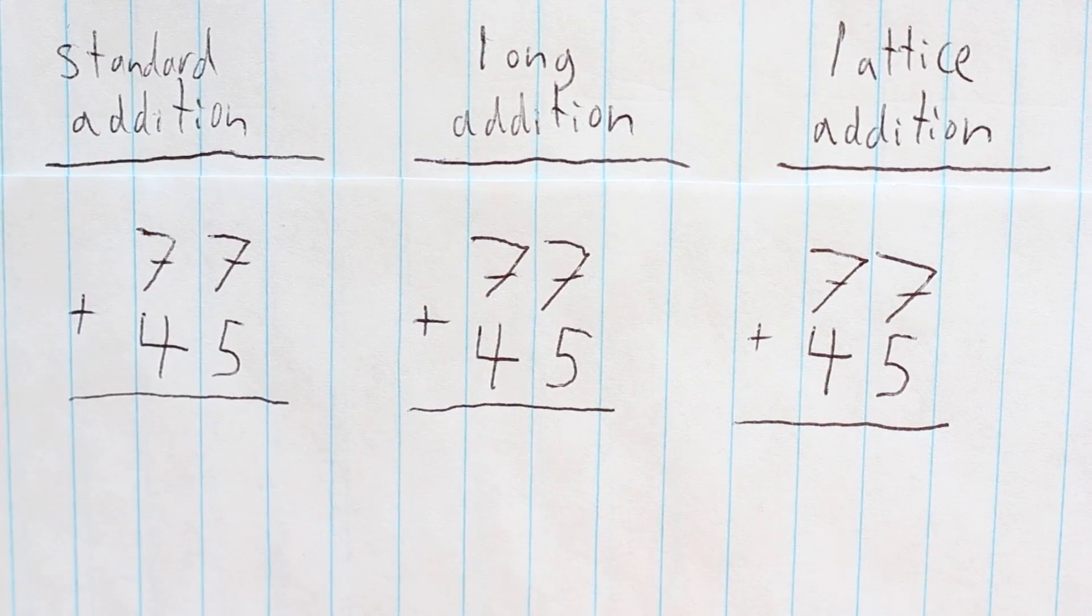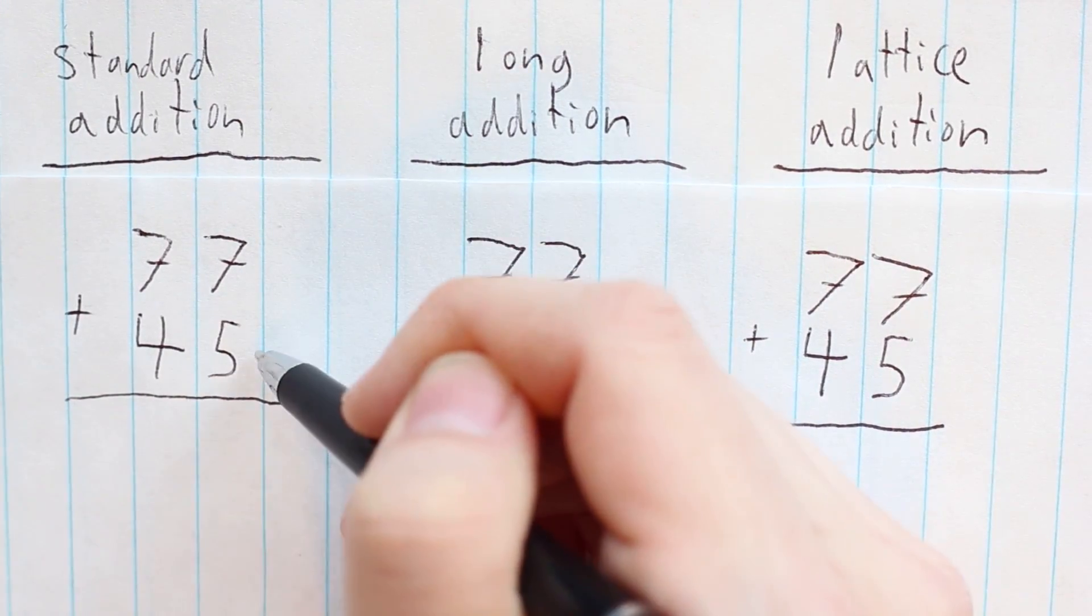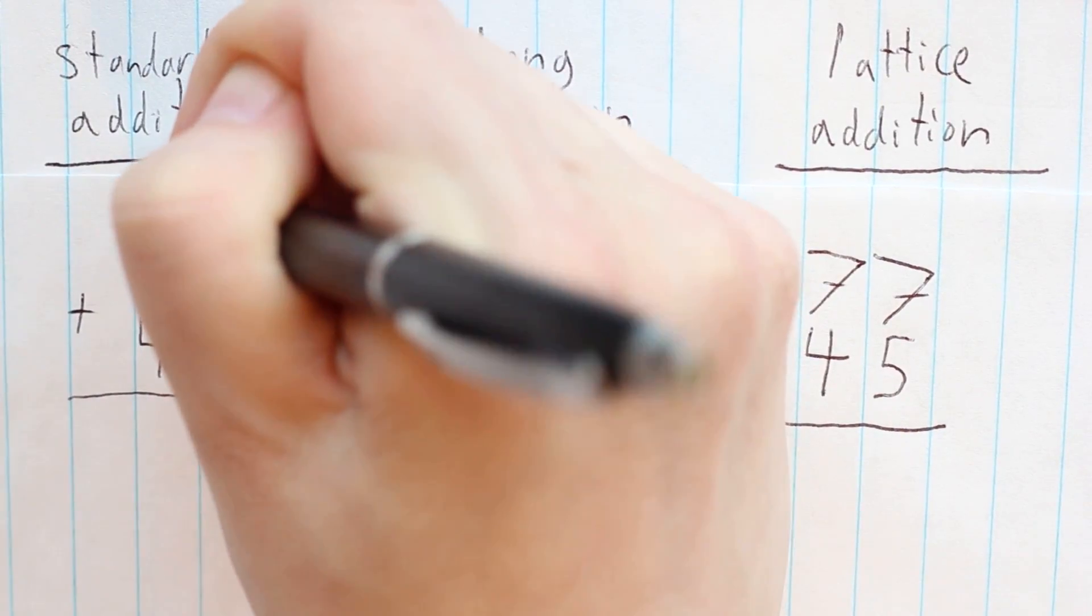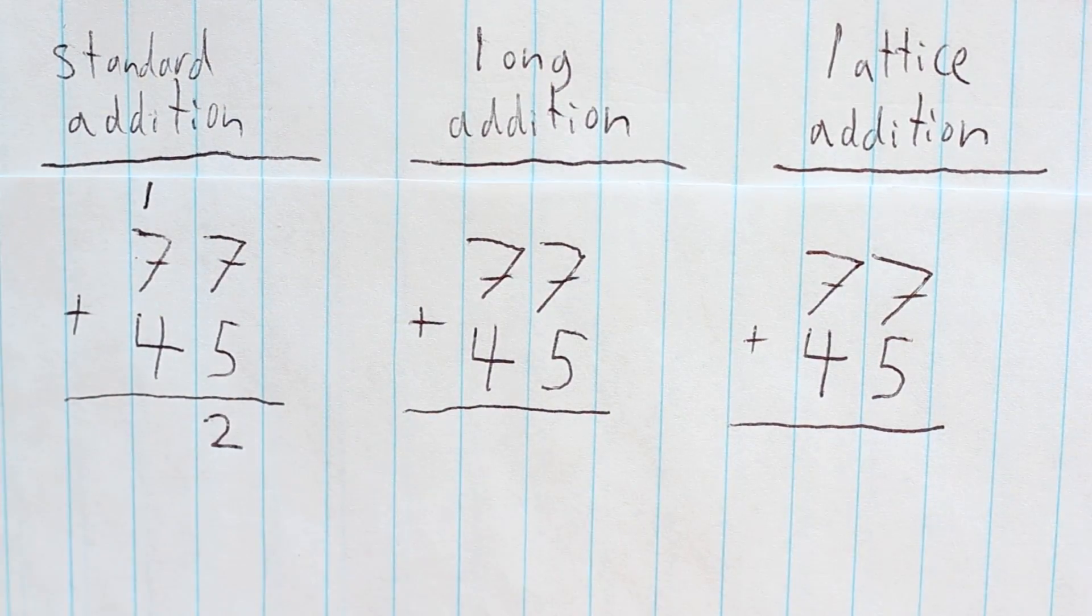Here are the main three. In the standard algorithm, you start on the right. 7 plus 5 is 12. You write the 2 in the ones place column and carry the 10, writing a 1 above the tens place column.